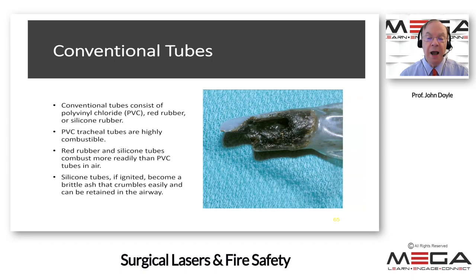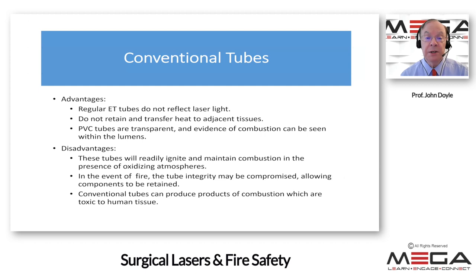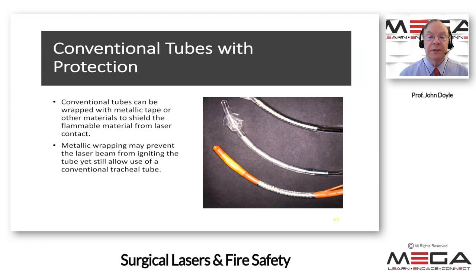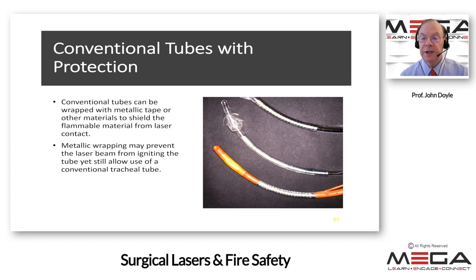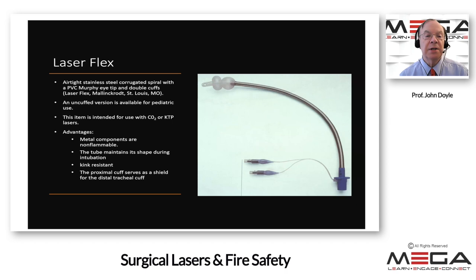With intubation, ventilation can be monitored and controlled, and both IV and inhalation agents can be used — but the endotracheal tube could catch fire if a conventional tube is used. Conventional polyvinyl chloride or silicone tubes are highly combustible, particularly in oxygen-enriched environments, and can produce toxic products of combustion. Some people protect a conventional tube with metal wrap, which may prevent the laser from igniting the tube. However, in current practice special custom tubes have largely replaced this approach.